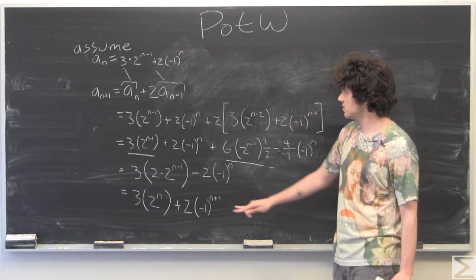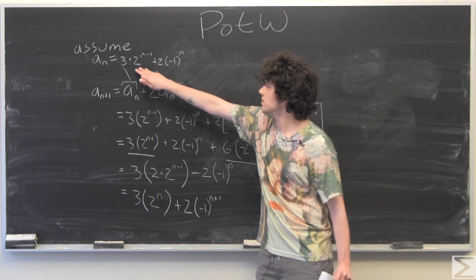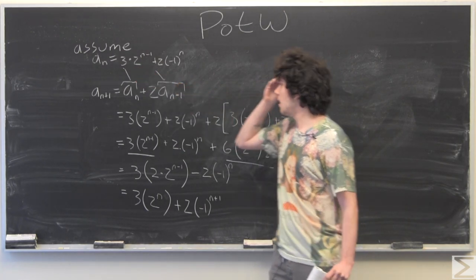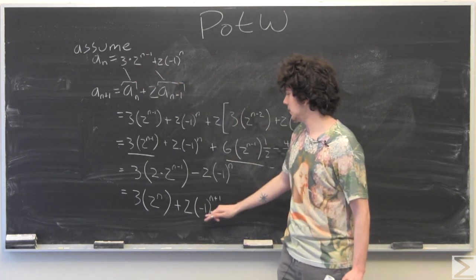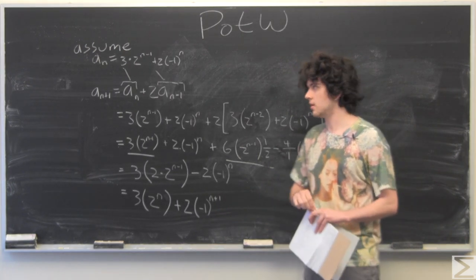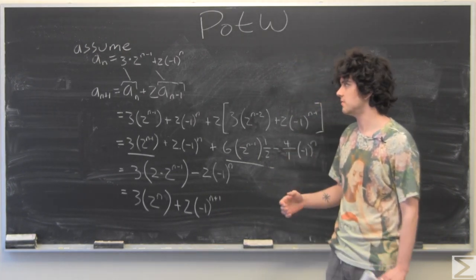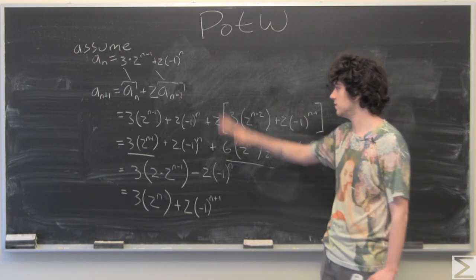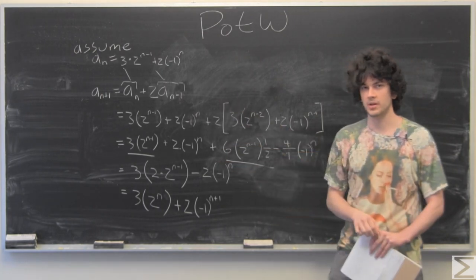And you notice that if we just plugged in n plus 1 here, this is exactly what we'd get. So that means our statement is valid, our assumption is valid, because we got to this using just logical manipulations along the way.